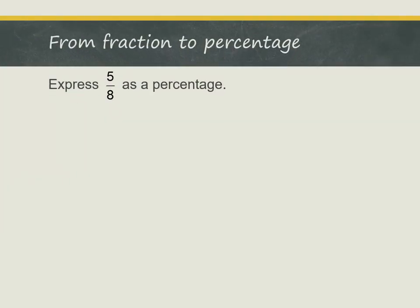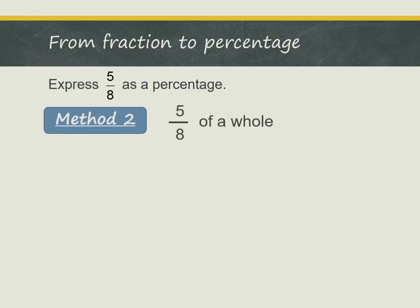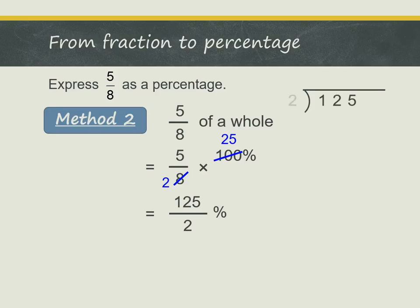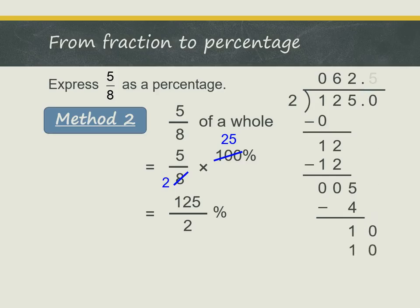Let's look at using method 2 to express 5 eighths as a percentage. In method 2, 5 eighths of a whole is equal to 5 eighths times 100%. We can simplify this further to get 125 out of 2%. Then we can do long division to get the answer, and so we have the answer 62.5%.